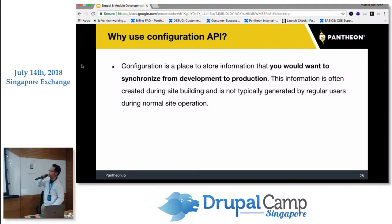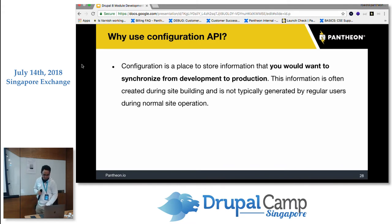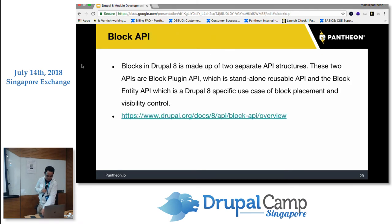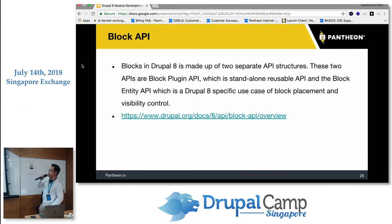Why use the Configuration API? Configuration is where you store information you want to synchronize from development to production. This information is created during site building and is not typically generated by regular users during normal site operation. The Block API in Drupal 8 is made up of two separate API structures: the Block Plugin API, which is a standalone reusable API, and the Block Entity API, which is Drupal 8's specific use case for block placement and visibility control.